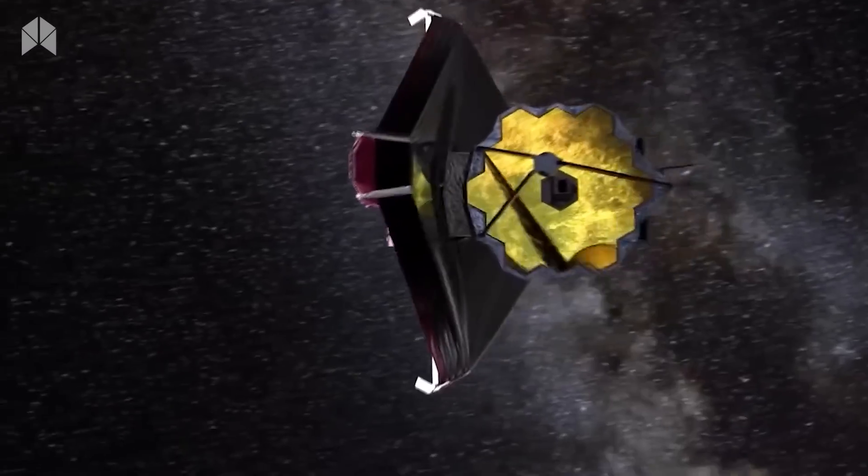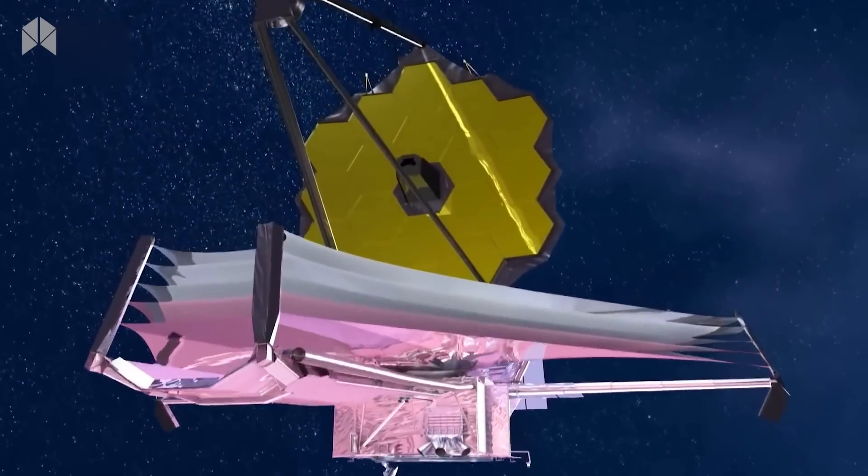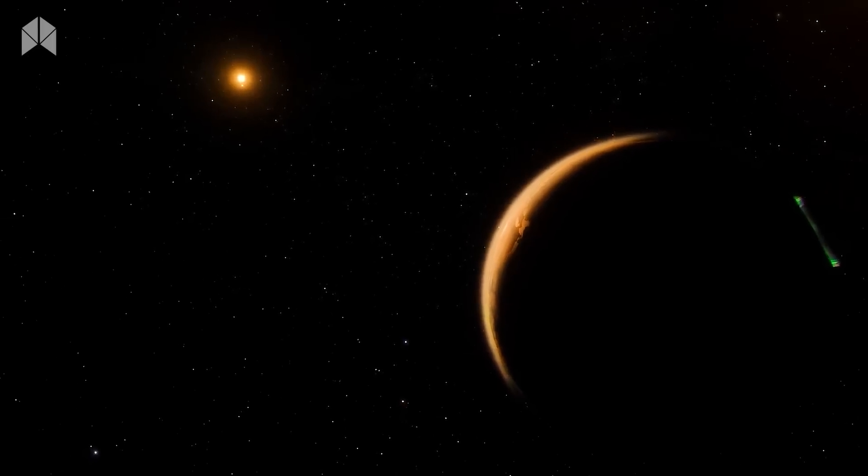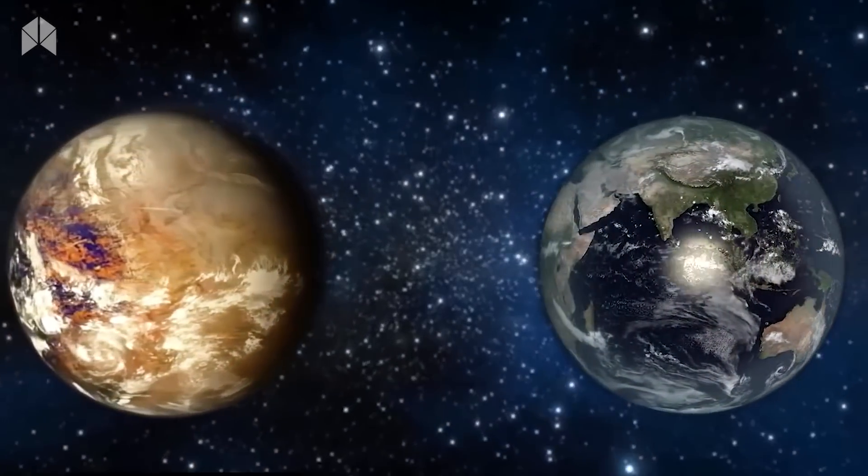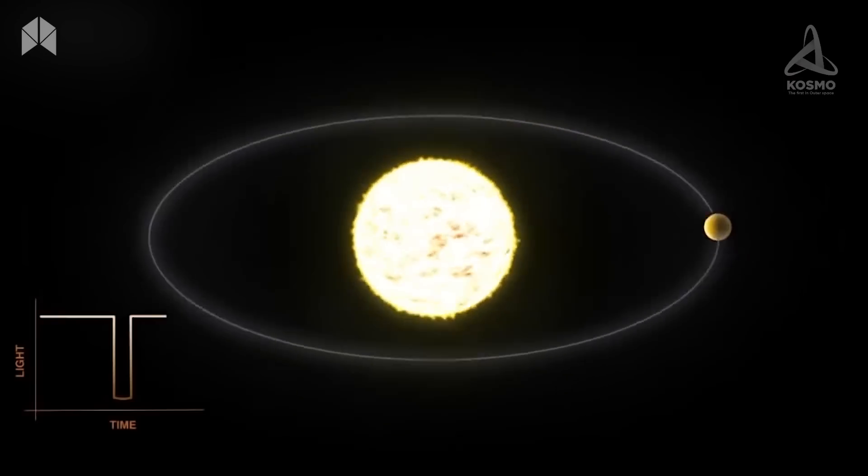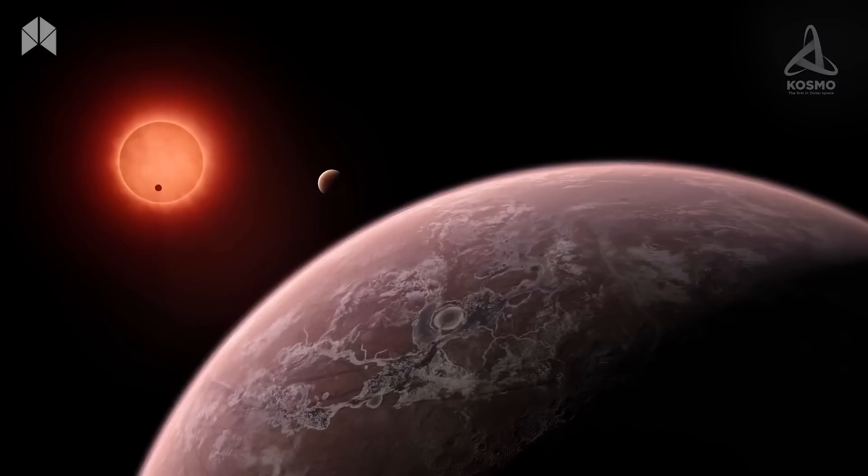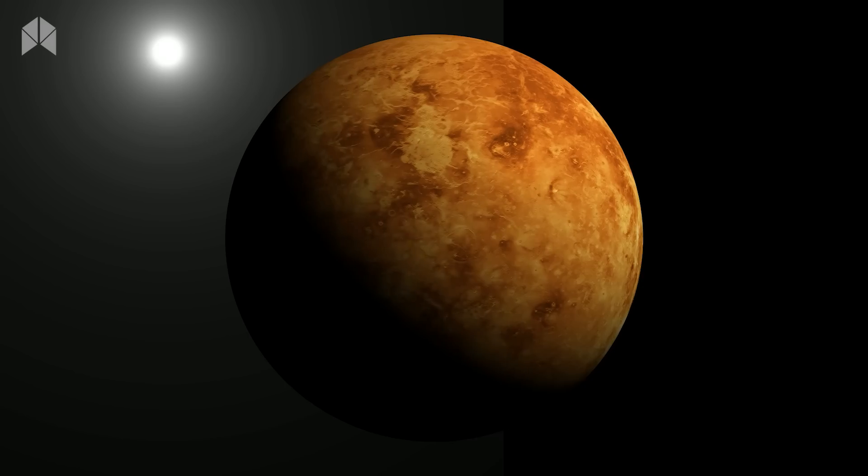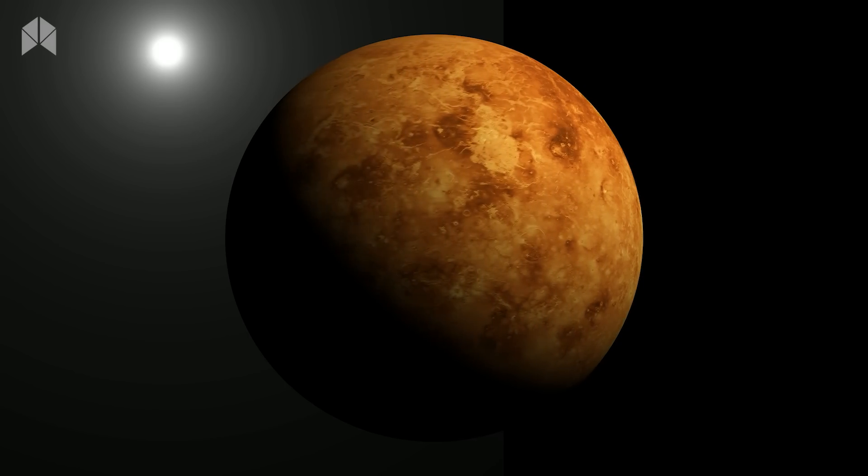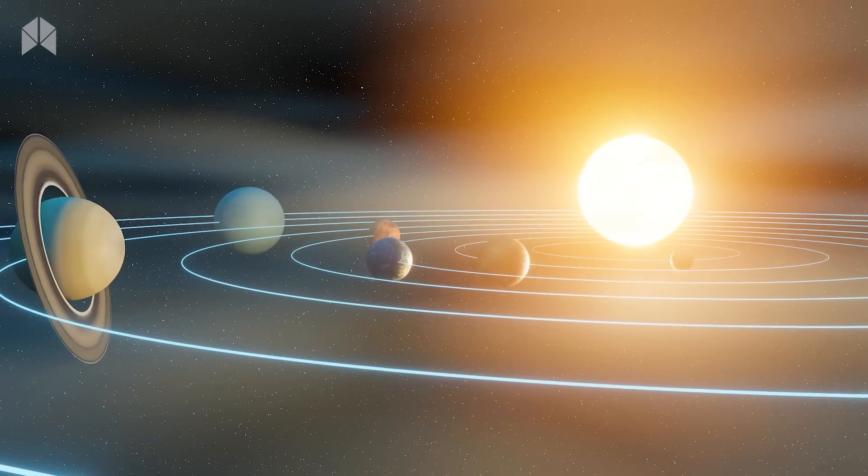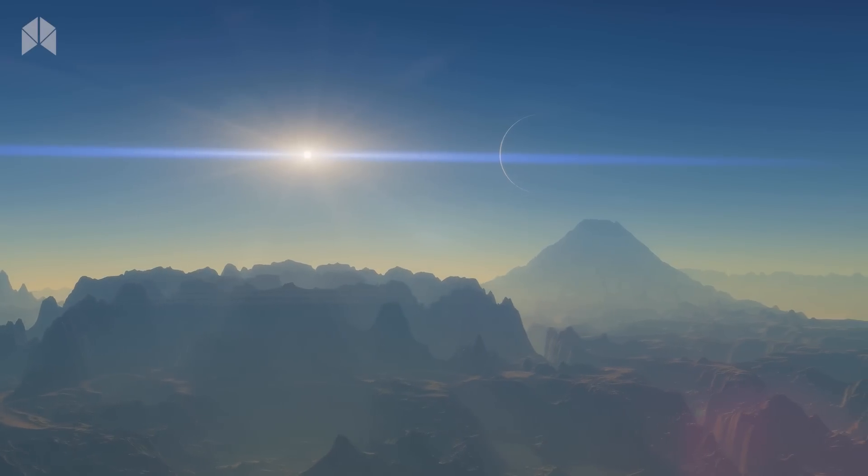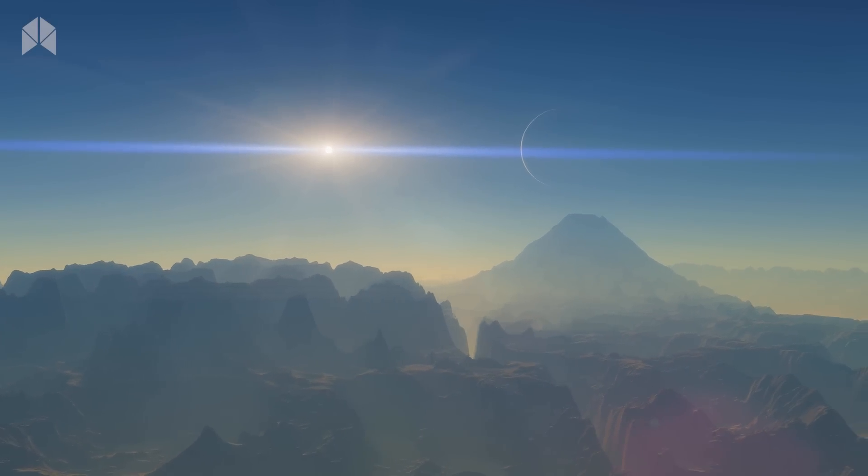The James Webb telescope is expected to provide answers to our inquiries about Proxima b, one of the most important and Earth-like exoplanets. Understanding the characteristics of exoplanets is crucial. Exoplanets are planets that have been found outside of our solar system, and because of their atmospheres and sizes, they may be habitable.